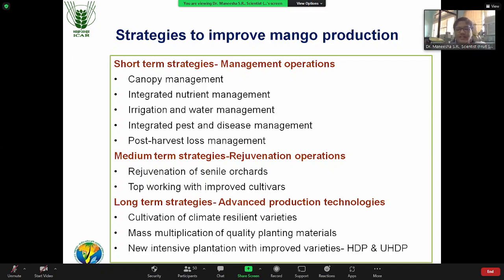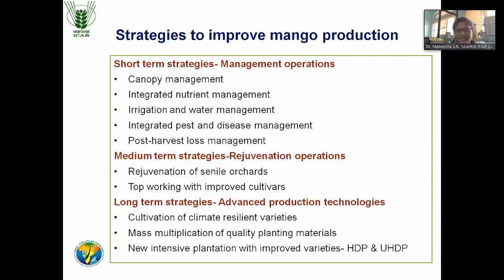Coming to the short-term strategies — what are the management practices that can be adopted in the orchard with an immediate effect? The first and foremost thing is canopy management, which includes different procedures. Then, another one is integrated nutrient management. In rainfed cultivation, we are not properly giving fertilizer application, irrigation, or water management. If you want to maintain a commercially viable orchard, proper nutrient management and irrigation practices need to be adopted. Another thing is integrated pest and disease management.